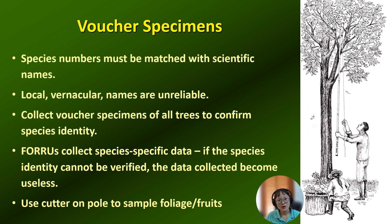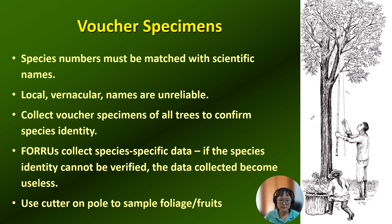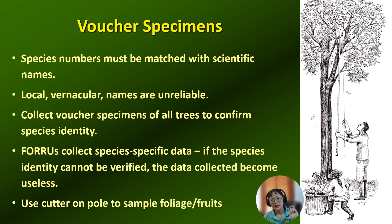For the trees that we work with, we can collect leaves, fruit, and flowers if possible, and make them into a voucher specimen. In this picture, we use a long cutting pole to get the leaves and fruit specimen. Remember that if we cannot verify the species, all the material we have will not be useful — we have to make sure that we work with the right species.